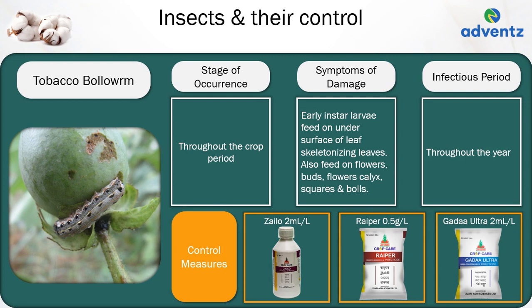The next insect is tobacco bollworm. It can occur throughout the crop period. The symptoms of damage are early instar larvae feed on the under surface of leaves, skeletonizing leaves, and also feed on flowers, buds, calyx, squares and bolls. It is active throughout the year. Control: apply Jai Kisan Xylo at 2 ml per litre, or Jai Kisan Griper at 0.5 grams per litre, or Jai Kisan Gadda Ultra at 2 ml per litre.